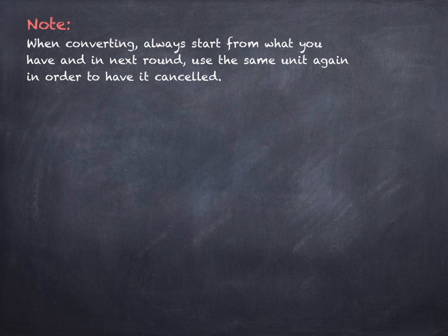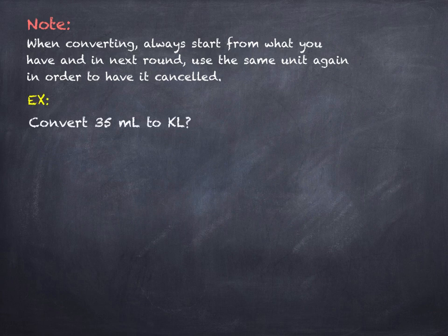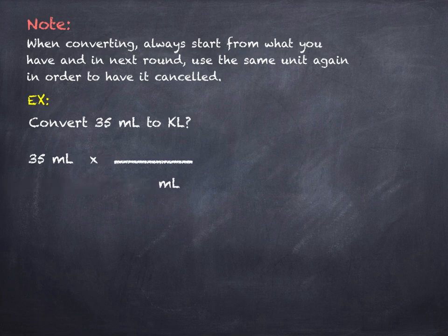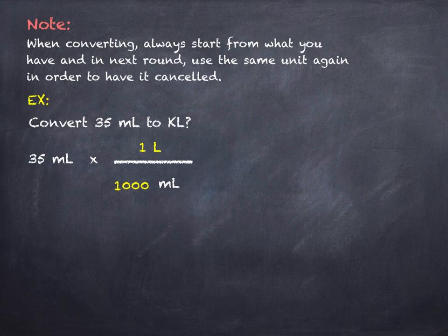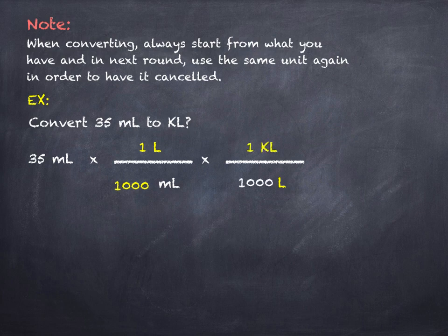Now let's look at how to actually do conversions. Always start from what you have, and in the next step use the same unit again in order to cancel it. For example, converting 35 milliliters to kiloliters: start with 35 mL, put milliliters in the bottom next to cancel it, then put liters on top — since for every one liter there are 1000 milliliters. Then put liters on the bottom and kiloliters on top, since for every one kiloliter there are 1000 liters. This cancels everything and gives you the final answer in kiloliters.